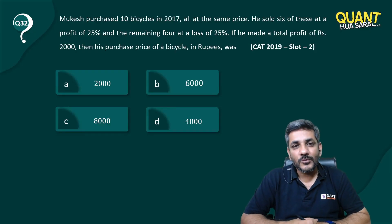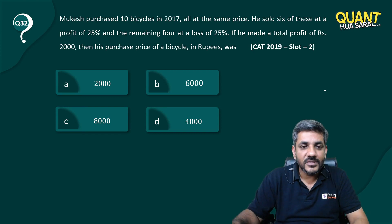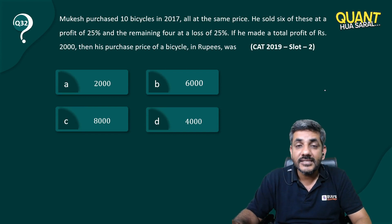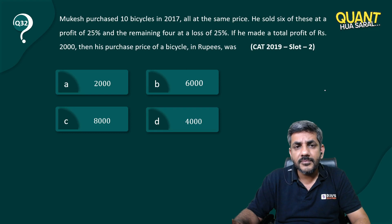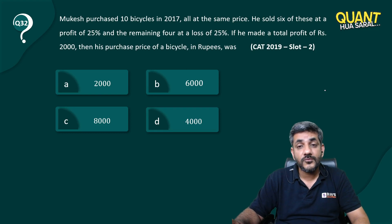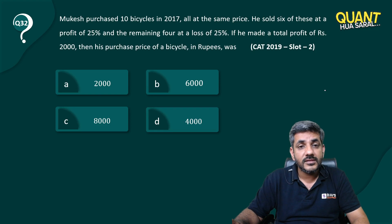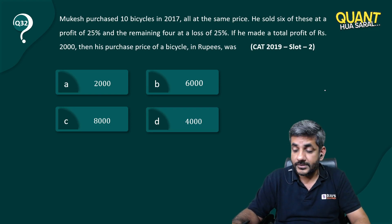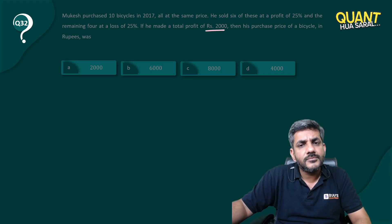Here we have question number 32 from the series. Mukesh purchased 10 bicycles in 2017, all at the same price. He sold six of these at a profit of 25 percent and the remaining four at a loss of 25 percent. If he made a total profit of rupees 2000, then find the purchase price of a bicycle. The question has already given you something in terms of rupees.